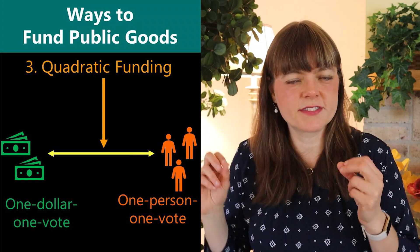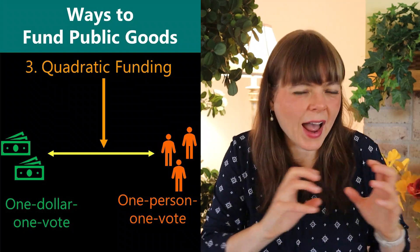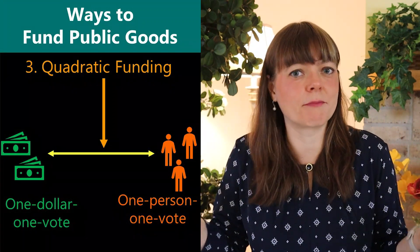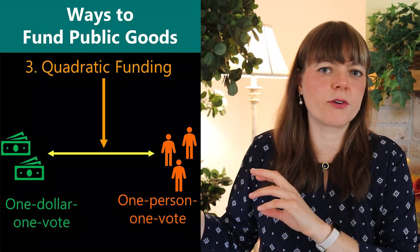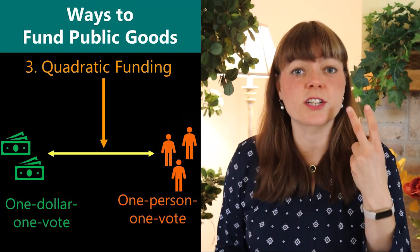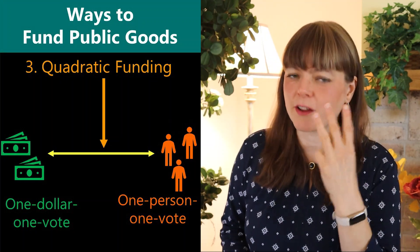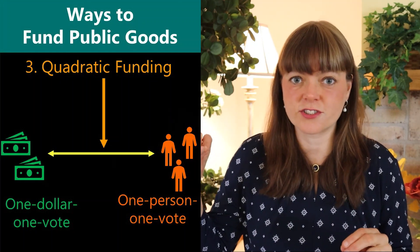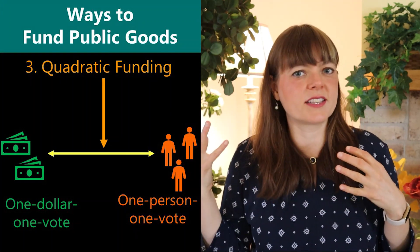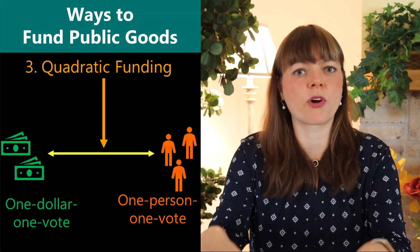Quadratic funding shifts from the one dollar, one vote mechanism of crowdfunding and moves it halfway toward one person, one vote. With one person one vote, you might not raise a lot of money, which is why you don't go all the way there. But with dollar-one-vote, the first vote costs $1, two votes costs $4 (two squared), and three votes costs $9. So you can have outsized influence if you have a lot of money, but it's not as outsized because every extra vote you buy costs more, meaning you're contributing more to the initial cost.